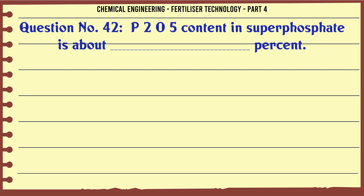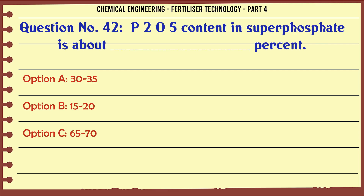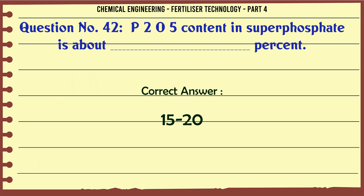P2O5 content in superphosphate is about what percent? a. 30-35%, b. 15-20%, c. 65-70%, d. 85-90%. The correct answer is: 15-20%.